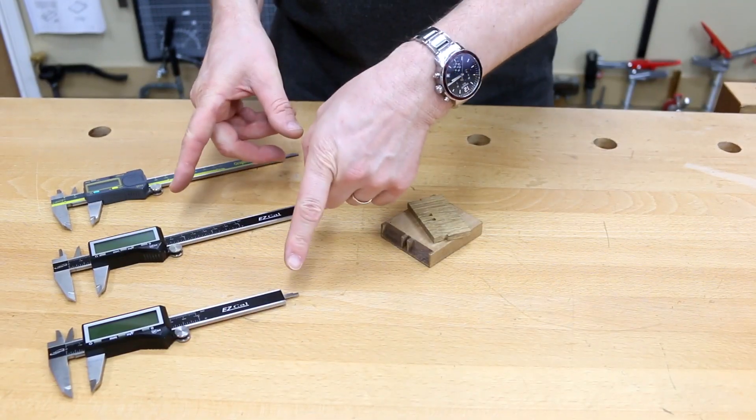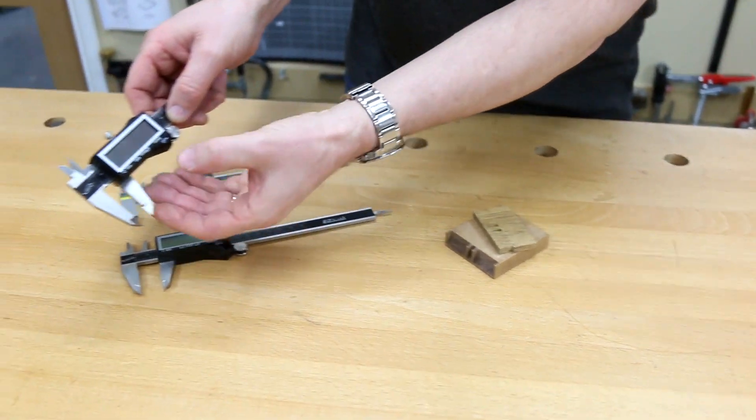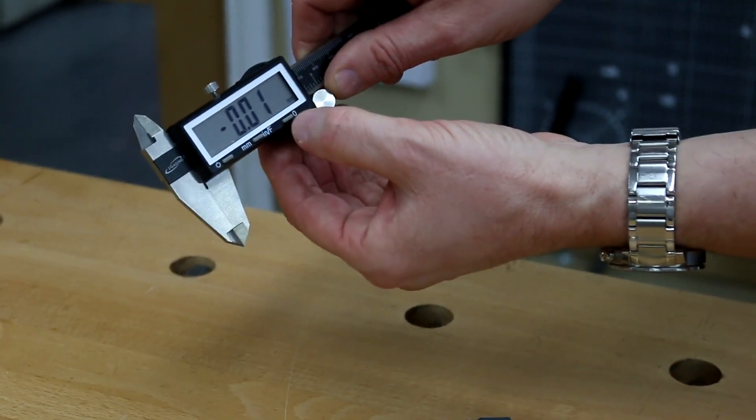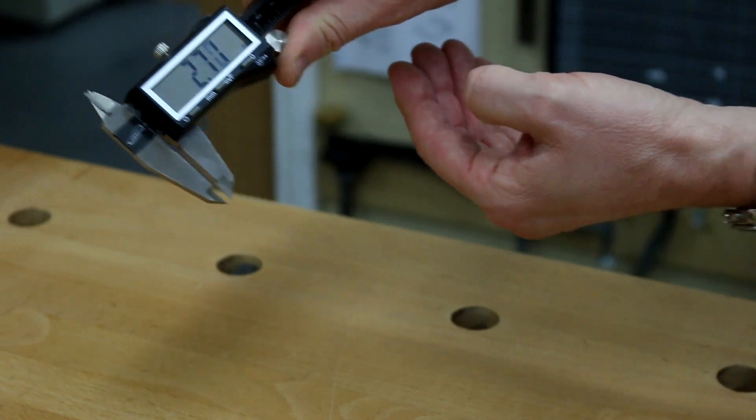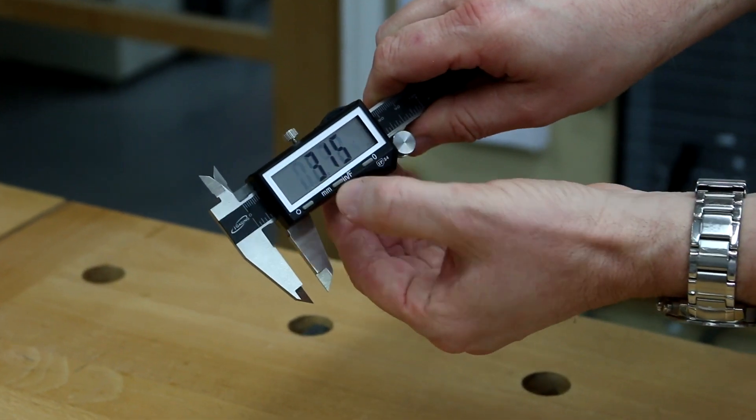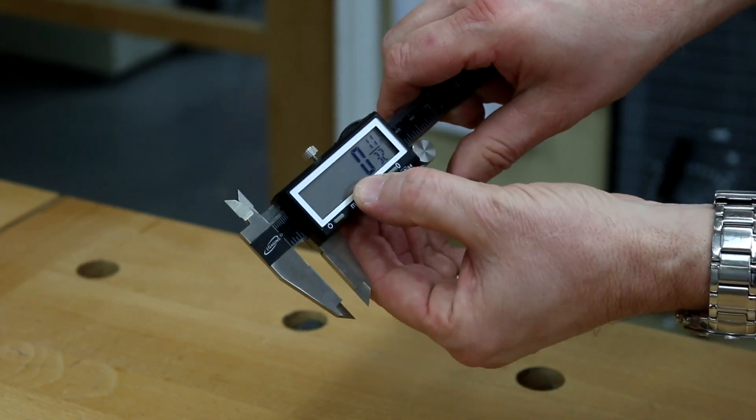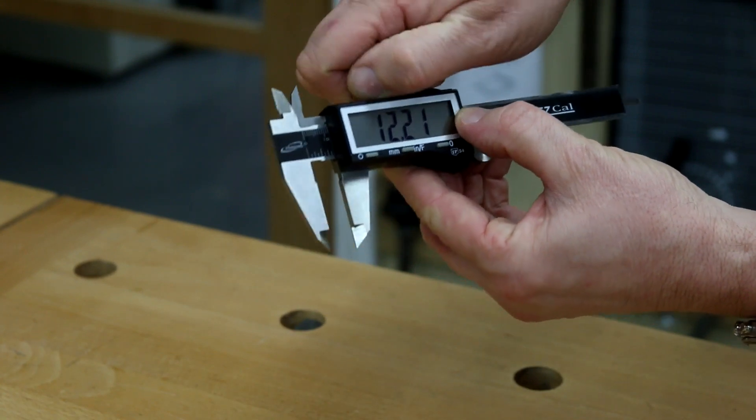If I turn him on, we can make sure he's back to zero. As we bring him out with the thumb wheel, we can change it from millimeters to inches to fractions. If you get it to a particular size you're happy with, you can then lock him off.